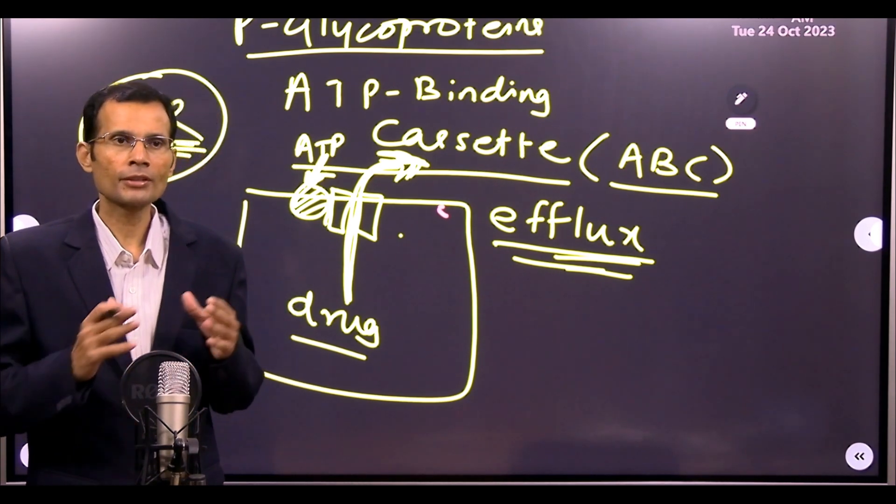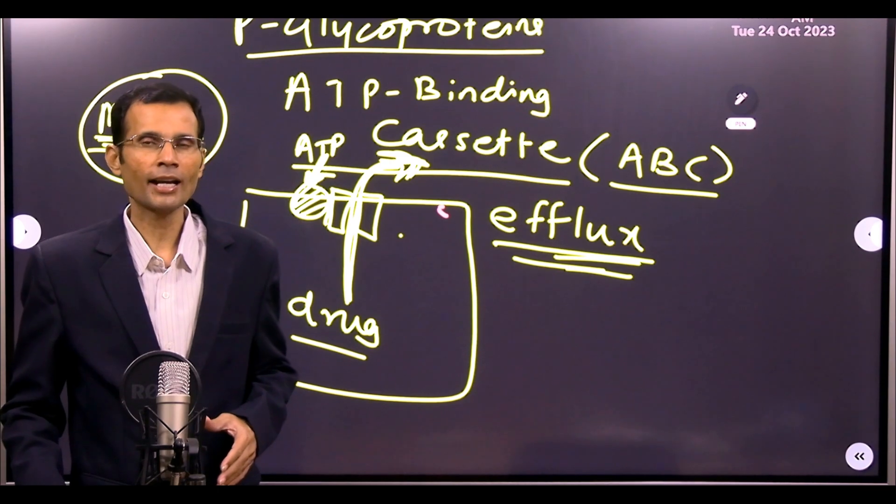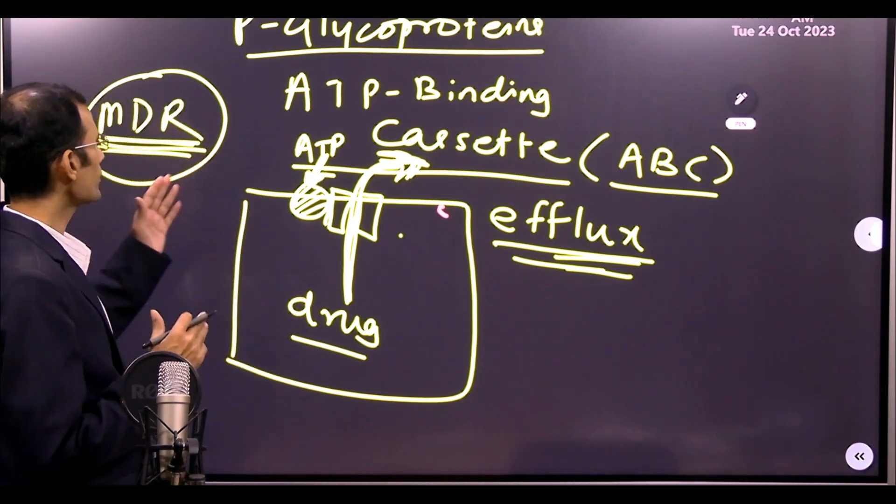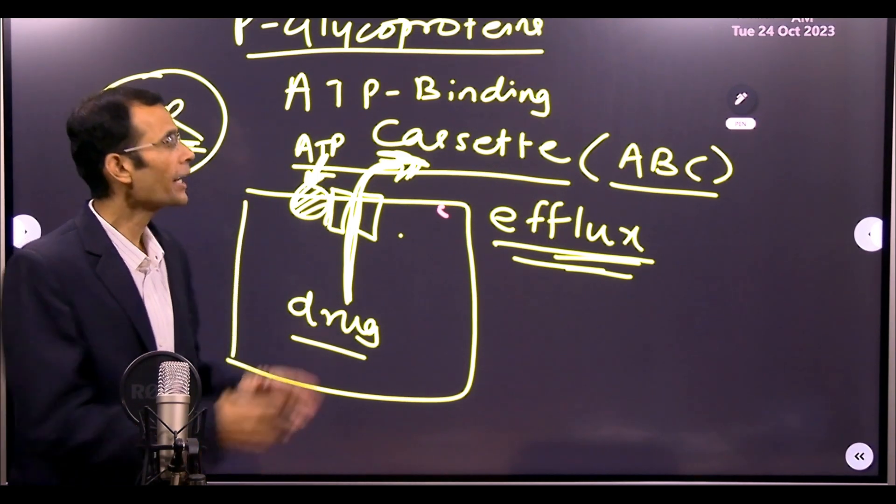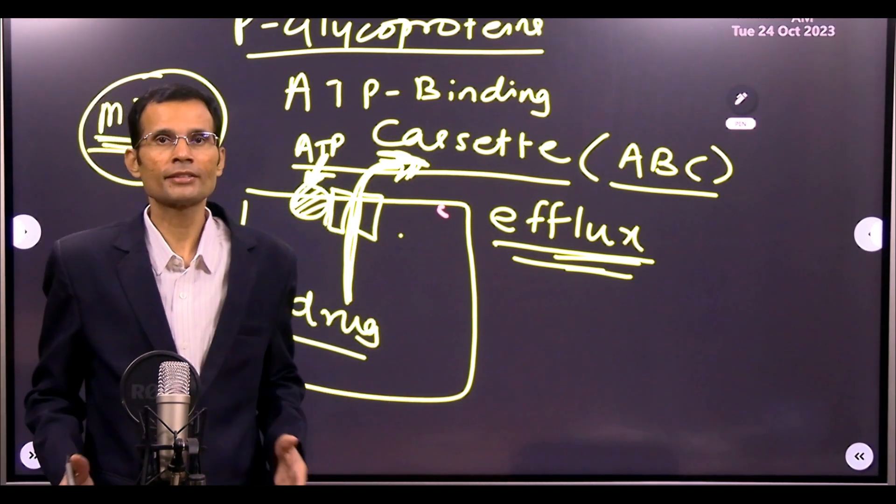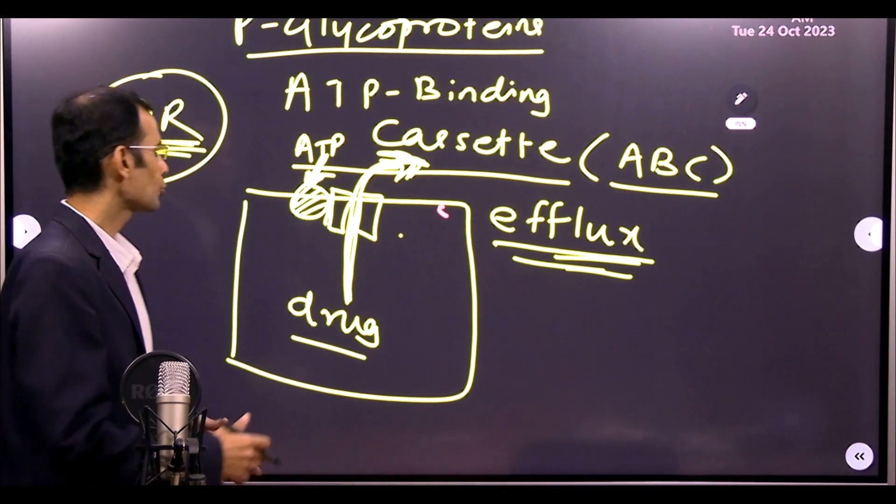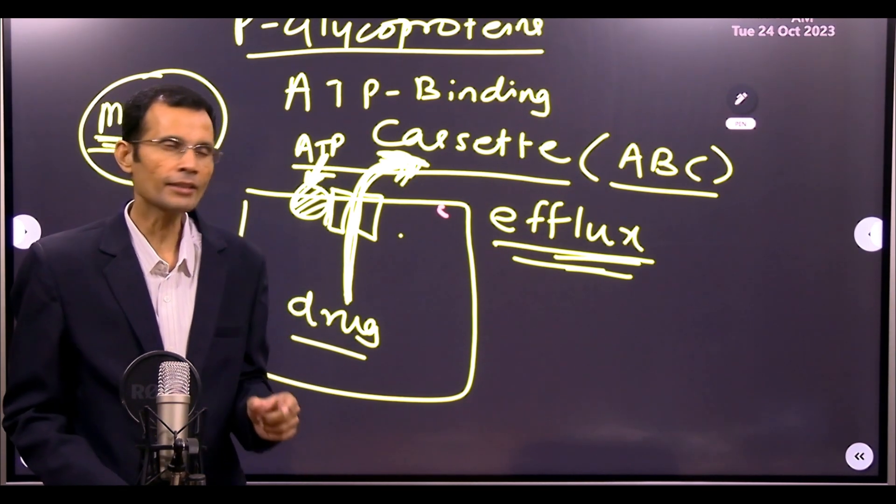Why certain cancer patients would become resistant to the action of anti-cancer drugs is that they express these MDR transporters which are a type of ABC transporters. That is how resistance develops to the drugs. Efflux is the mechanism that you should understand in this case.